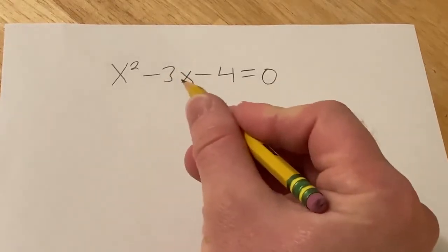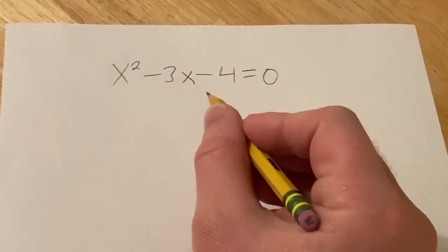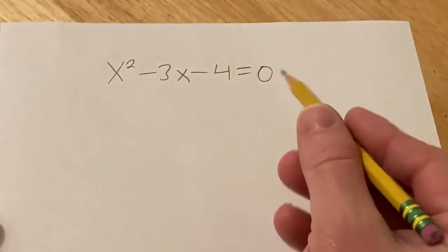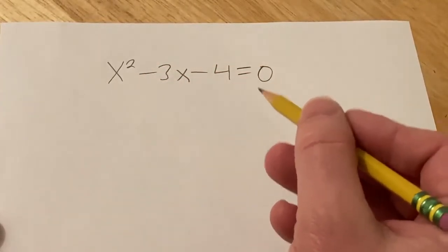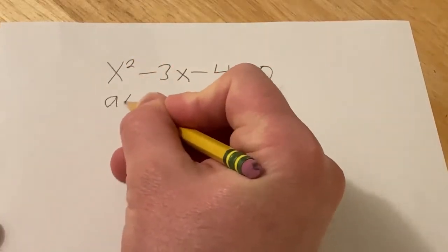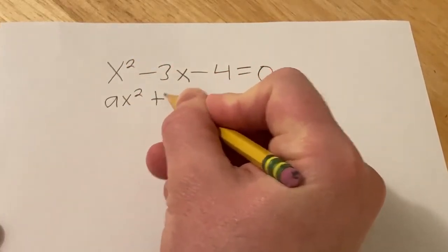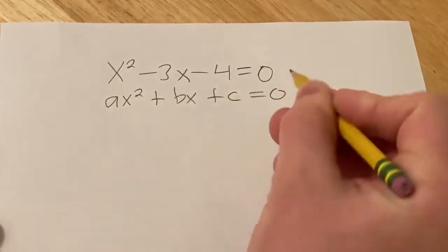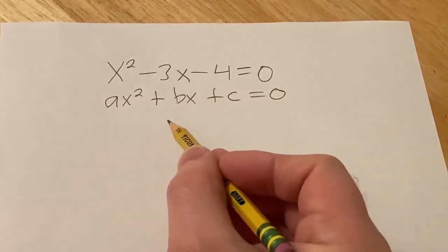Hello, in this problem we are going to solve this equation using the quadratic formula. So when you're using the quadratic formula, the very first step is to identify a, b, and c. So this is really ax squared plus bx plus c equals zero. So this is the form of a quadratic equation.